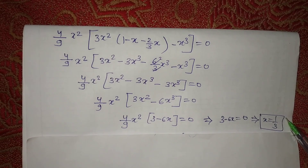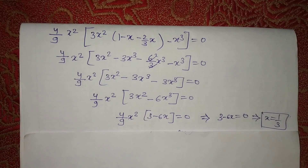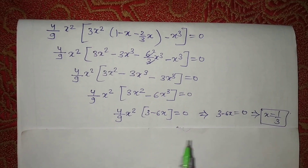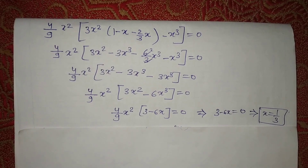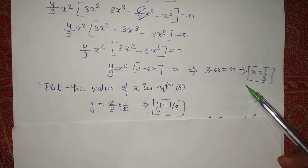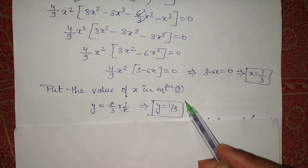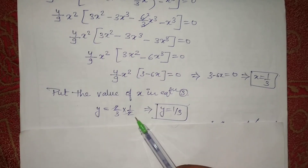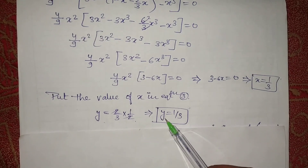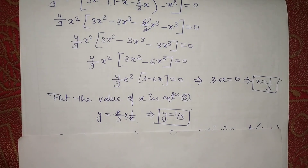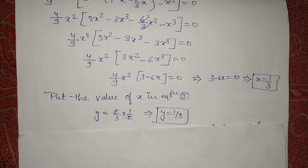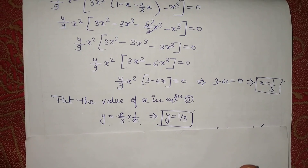Understand — I have solved it completely in detail and you will get the answer. Now we put the x value into our third equation to get the value of y. So we get our roots: x = 1/3 and y = 1/2. This level of solving is needed if the maxima-minima question is for 5 or 7 marks.